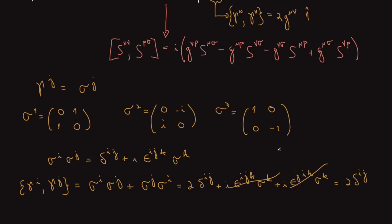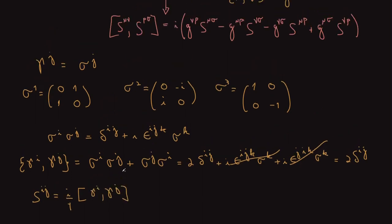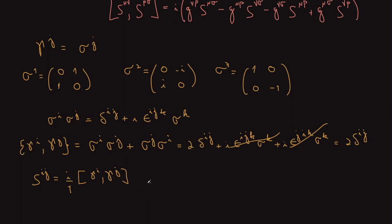This proves that the Pauli matrices satisfy the Clifford algebra for three-dimensional Euclidean space, so they are a good choice for the Dirac matrices in 3D. Then I can write S_{ij} as (i/4)[gamma_i, gamma_j], which by using the commutator of Pauli matrices can be rewritten as (1/2) epsilon_{ijk} sigma_k. Since I'm in Euclidean space, it doesn't matter if I put these indices up or down.